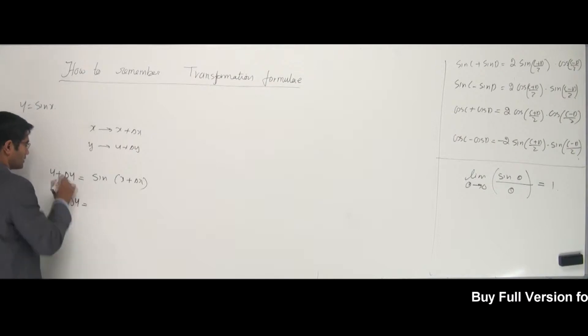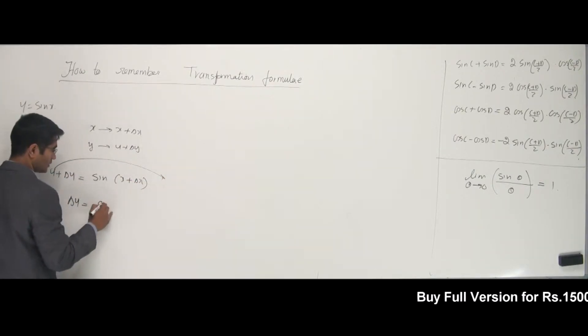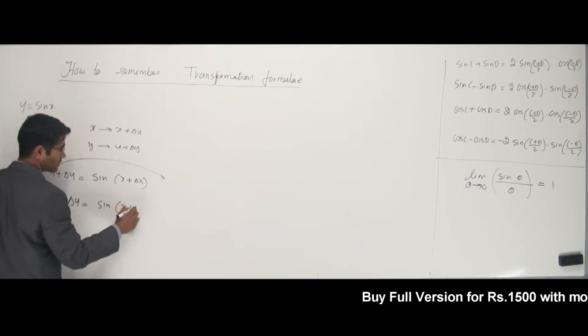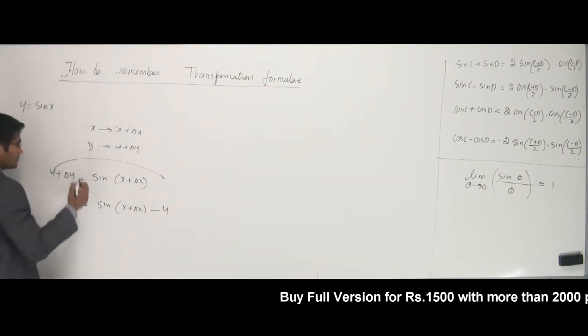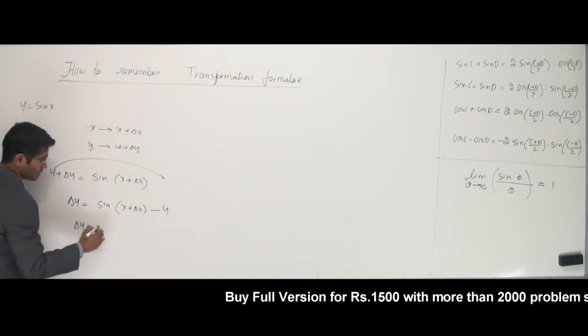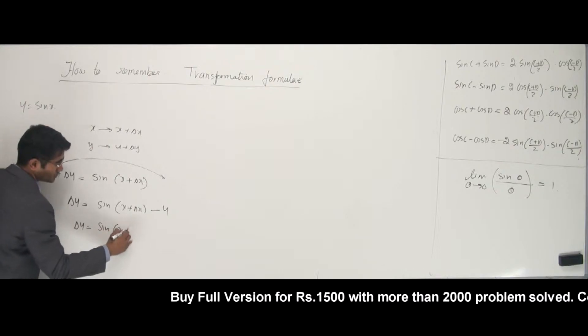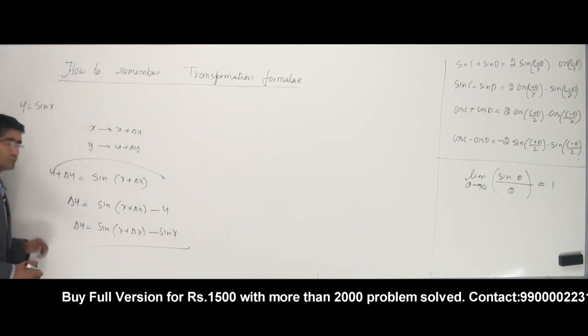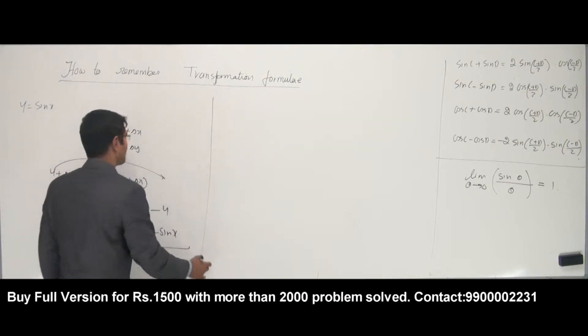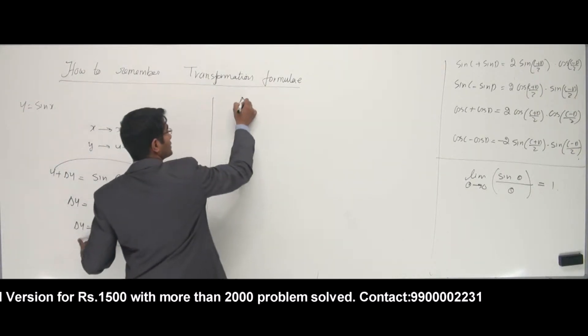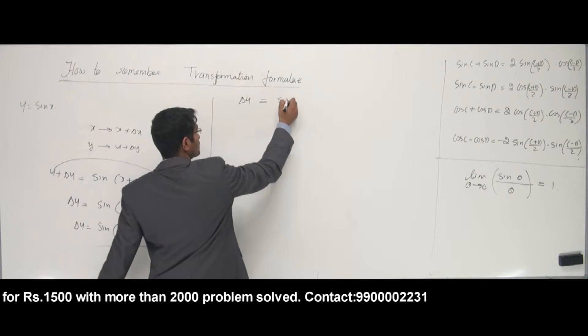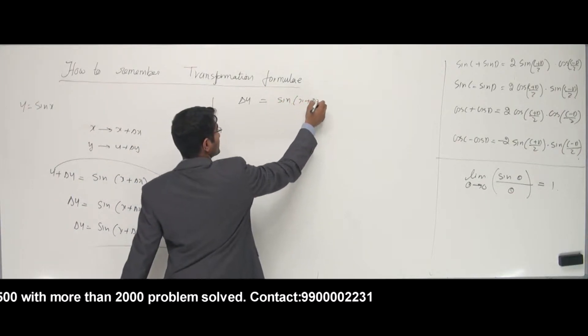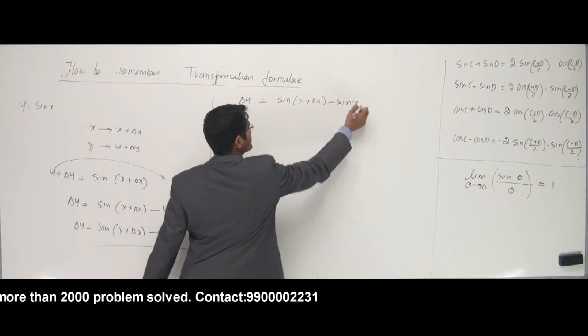Take y. So, can I put y on the other side? Yes. So, delta y is sine of x plus delta x minus sine x. That's what I have, alright? So, the first stage is done, where I have delta y on one side. I have sine of x plus delta x minus sine x.